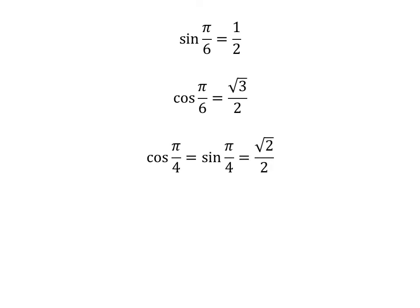As we know, sine of pi upon 6 is equal to 1/2, cosine of pi upon 6 is equal to square root of 3 upon 2, and cosine of pi upon 4 is equal to sine of pi upon 4 is equal to square root of 2 upon 2. So we plug in these values into the above equation.